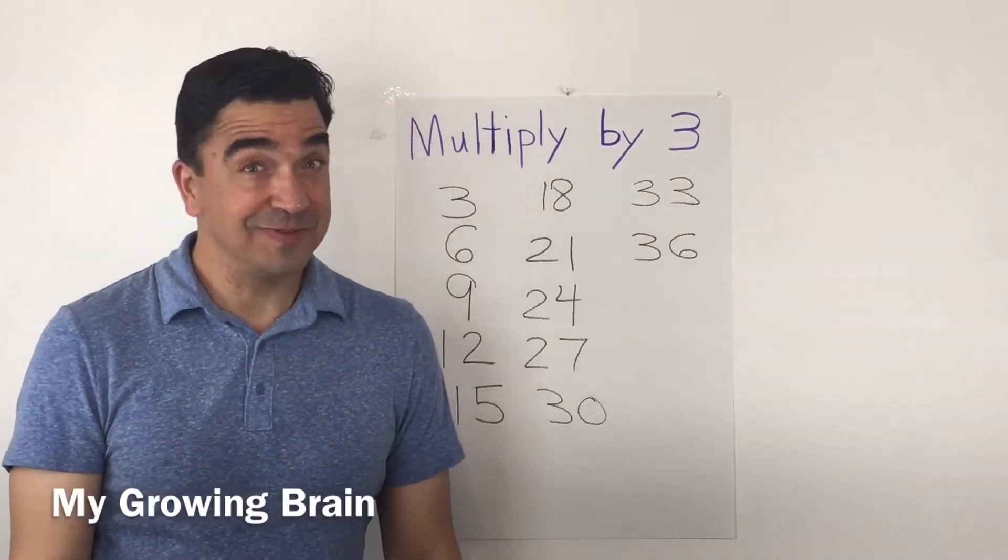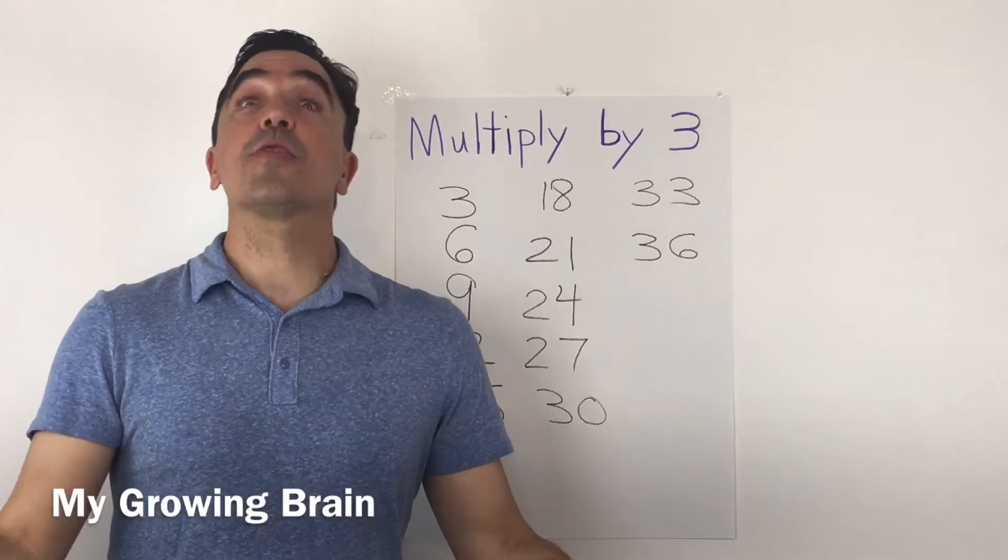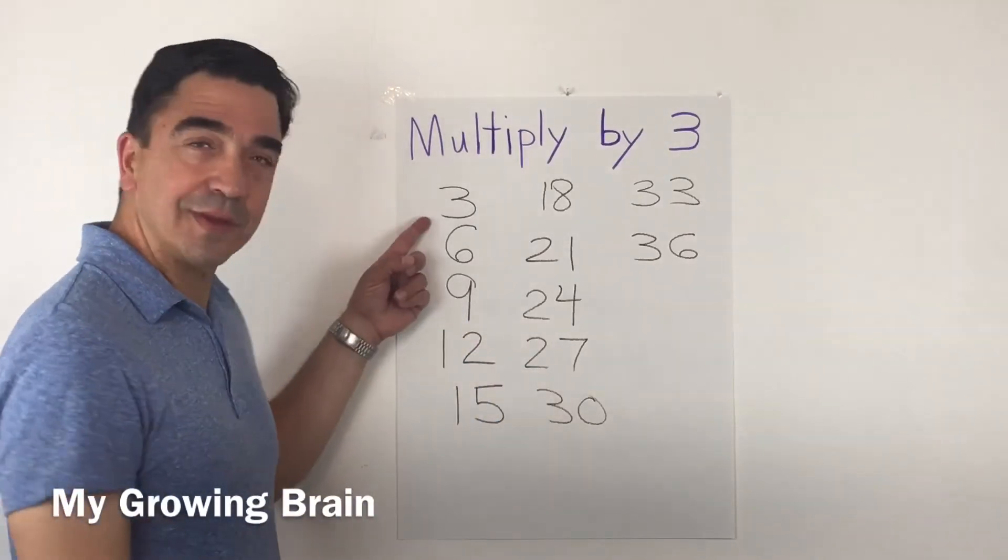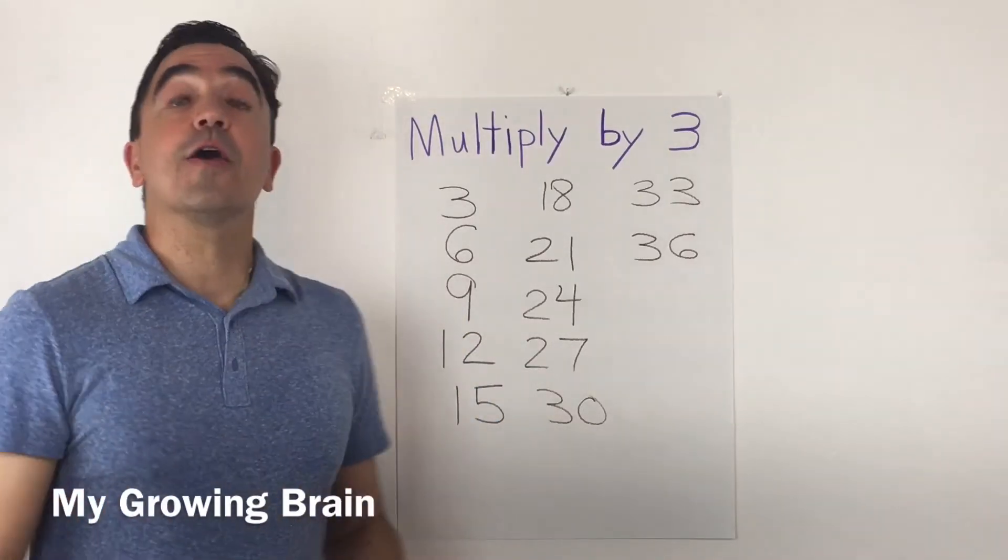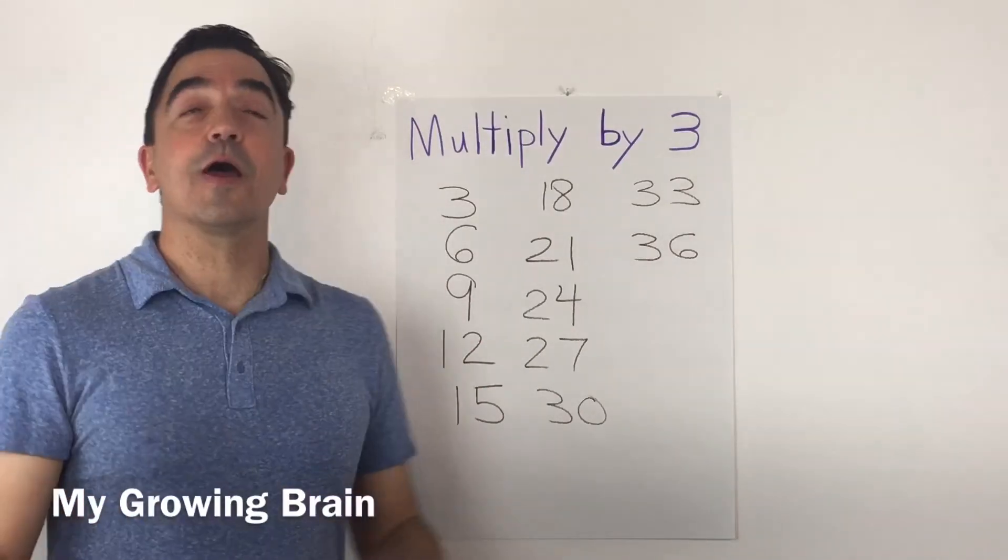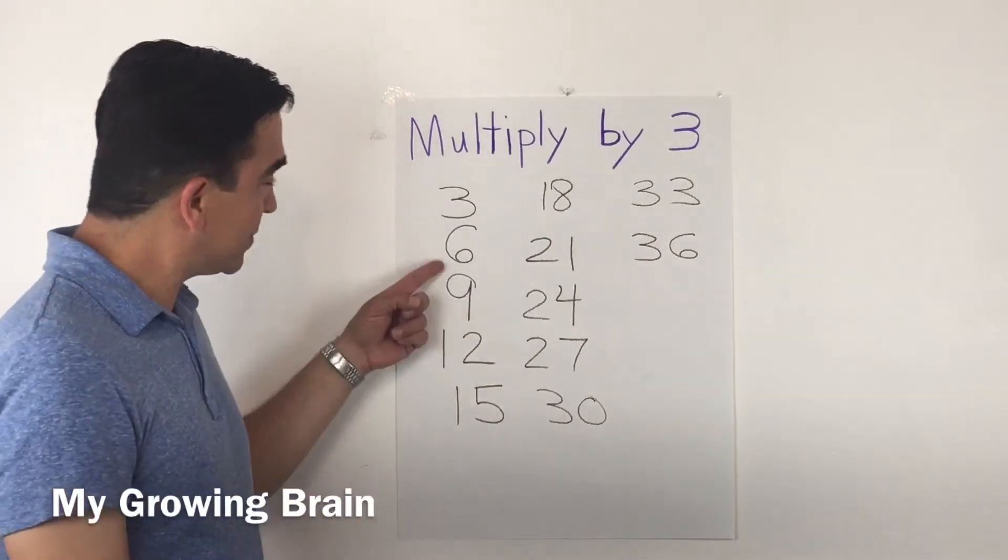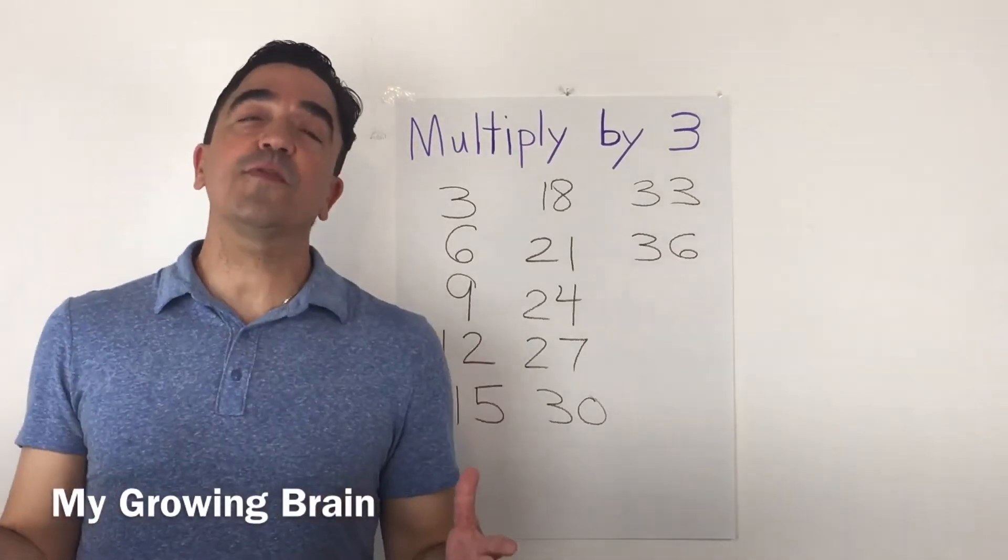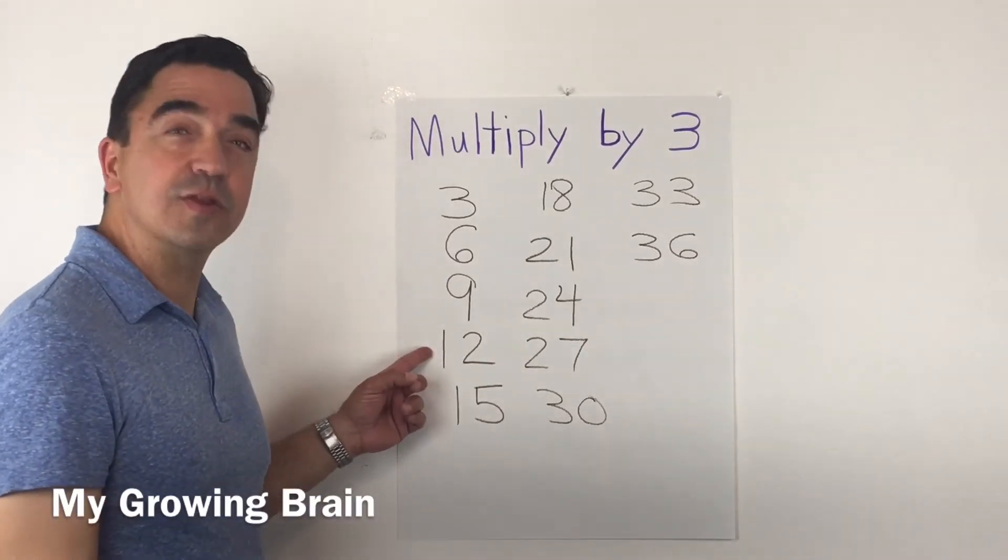Now, watch my trick. Three times one, three. Three times two, six. Three times three, nine. Three times four, 12.